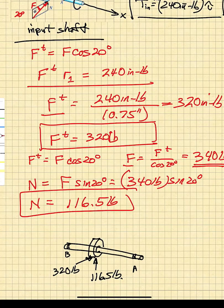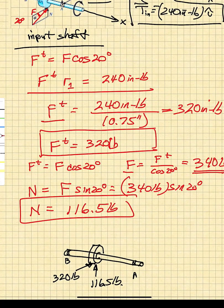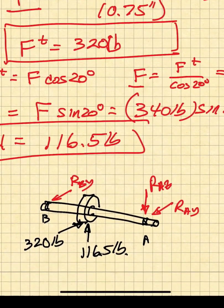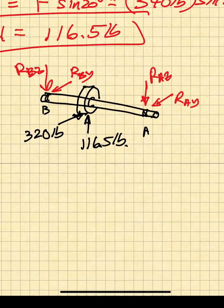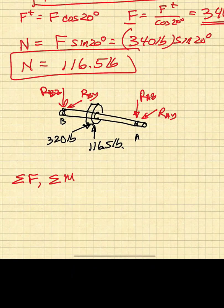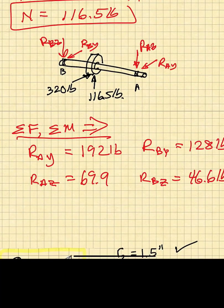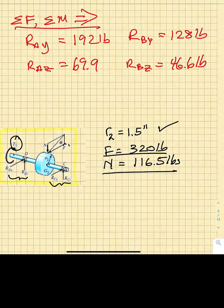So we have these forces that are acting. We now have to deal with the reactions in the Y and the Z directions. You'll notice that I've drawn both of these reactions in the negative sense. Reaction at B in the Y and reaction at B in the Z direction. And we just use sum of the forces, sum of the moments to determine the reaction forces. If we use sum of the forces and sum of the moments, we can solve for RAY, RAZ, RBY, and RBZ.